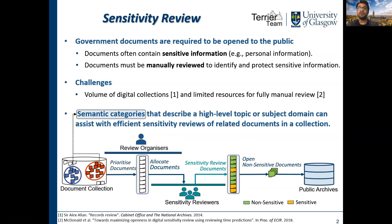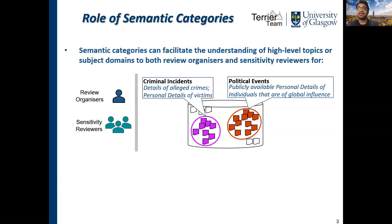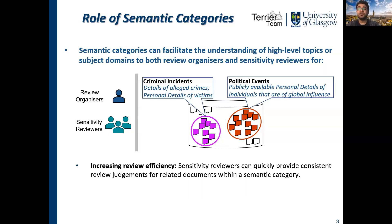In this work, we aim to increase the efficiency of human sensitivity reviews by leveraging latent semantic categories that describe a high-level topic or subject domain in a collection. Semantic categories can facilitate the understanding of high-level topics or subject domains in a collection — for example, criminality or political events. We hypothesize that presenting the reviewers with such clusters of semantically similar documents will assist them to quickly provide sensitivity judgments for related documents.